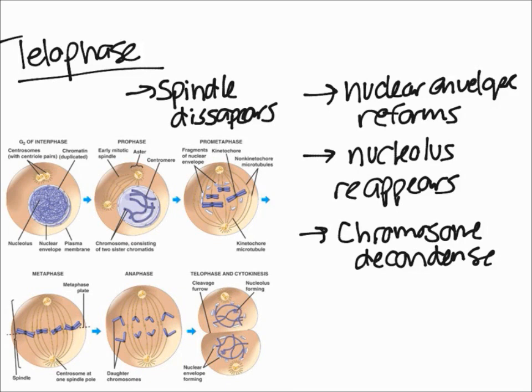so that the genetic information can be read and the chromatin form of DNA starts to occur. A good way to remember it is that telophase essentially undoes what occurred in prophase.